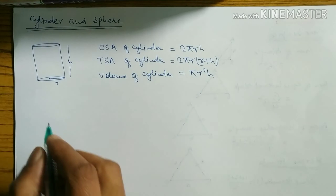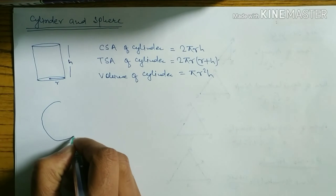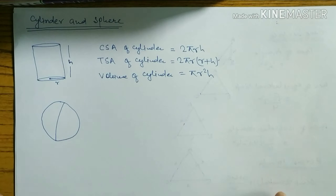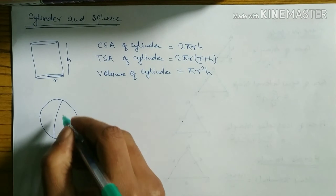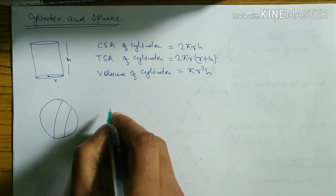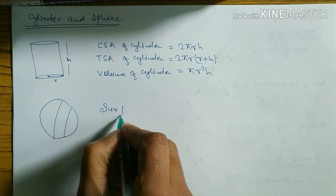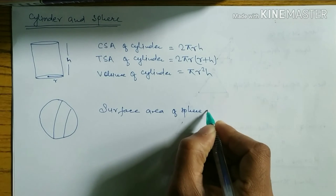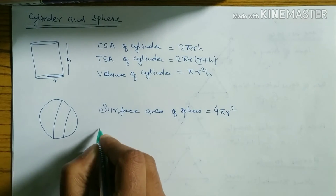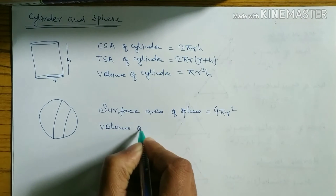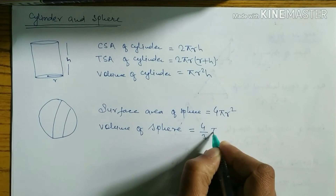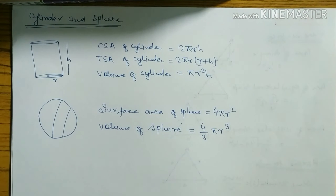After this, let's look at the sphere. A sphere is not a circle — examples include a football, globe, or tennis ball. The surface area of sphere = 4πr². The volume of sphere = 4/3 × πr³, where r means radius, which is half of the diameter.